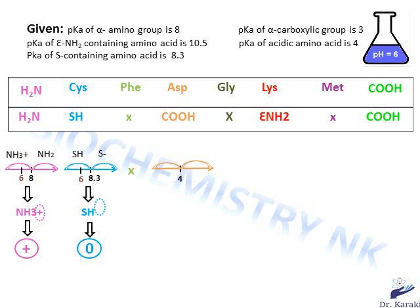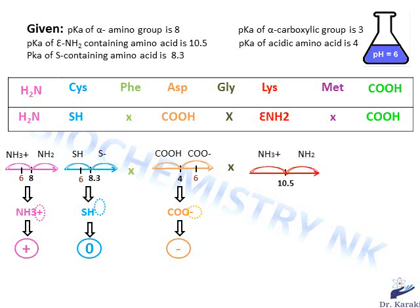Aspartic acid has a carboxyl function in its side chain. We draw an axis and put the pKa of 4 in the middle. If the pH is lower than 4, the protonated form COOH predominates; if it's higher, the deprotonated form COO− predominates. At pH 6, which is higher than 4, COO− predominates and the charge is negative. Glycine doesn't have an ionizable group. Lysine has an epsilon NH2 with a pKa equal to 10.5; at pH 6, which is lower than 10.5, the protonated form NH3+ predominates and bears a positive charge.